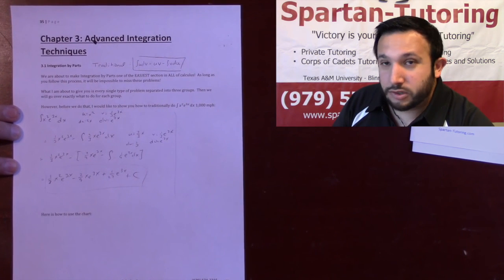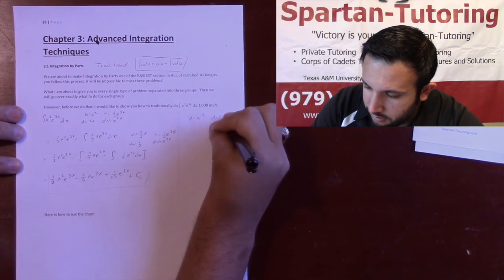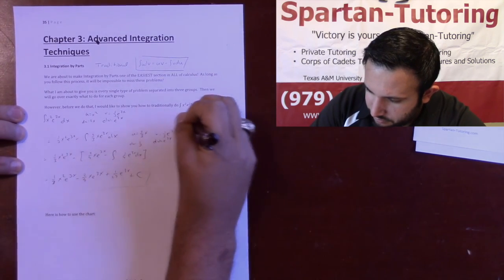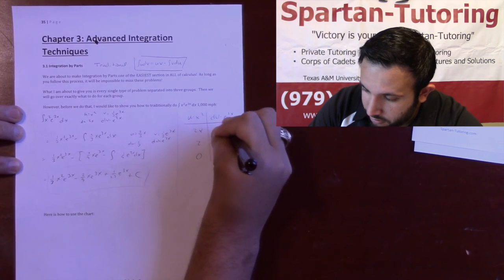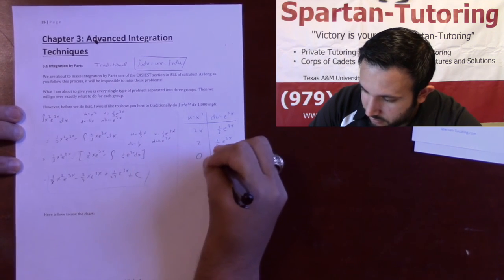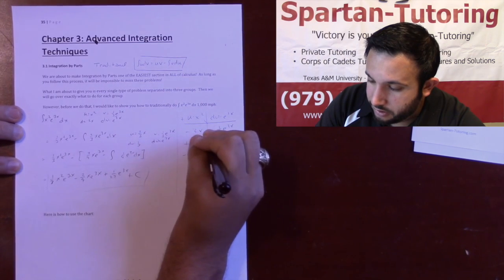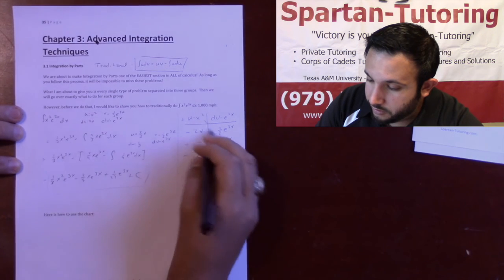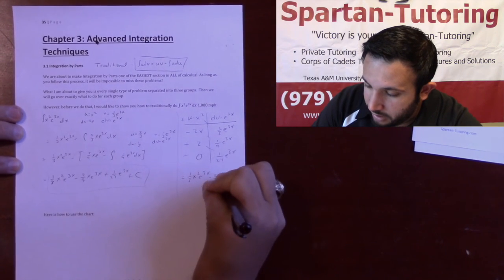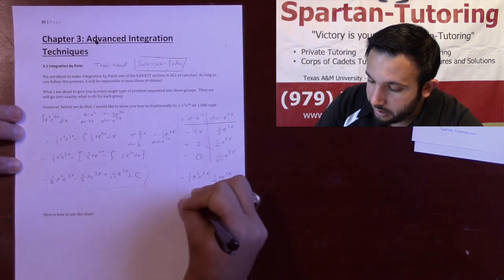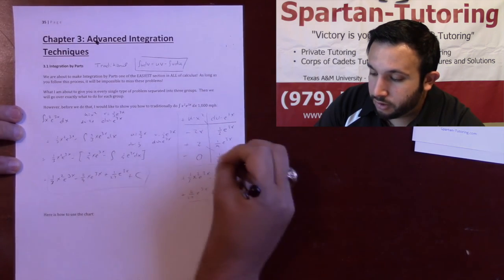Here's the way I'm going to show you. u is x squared and dv is e to the 3x. Using the chart — take the derivative, derivative, derivative on the left, and integrate, integrate, integrate on the right — then multiply down and across. The final answer: one-third x squared e to the 3x, minus two-ninths x e to the 3x, plus two-twenty-sevenths e to the 3x, plus C.